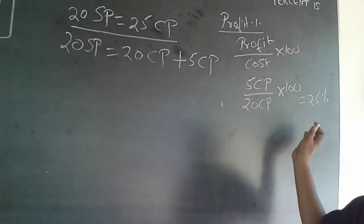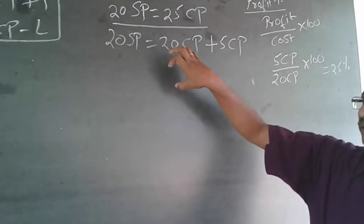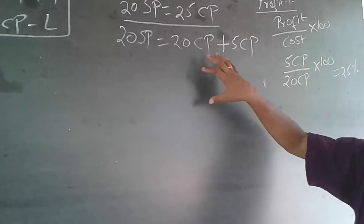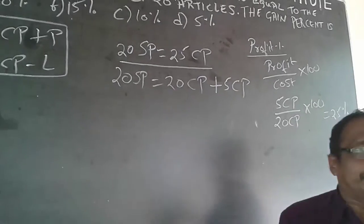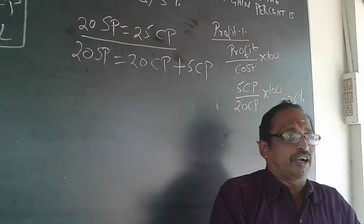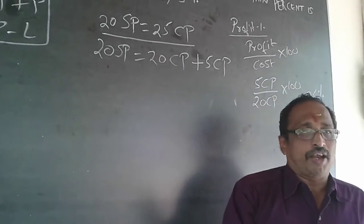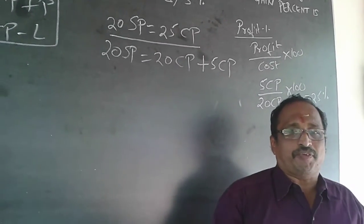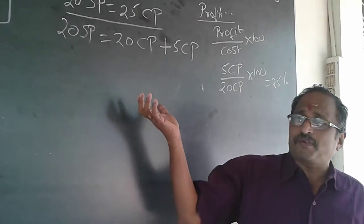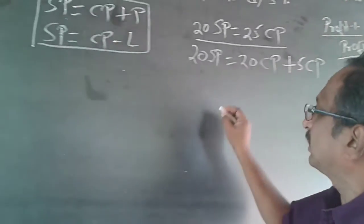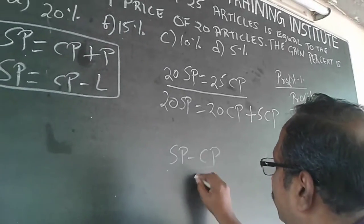Once you understand this logically: you purchased 25 articles, sold 20 articles and recovered your money, so you have 5 articles remaining in hand. Those 5 articles are your profit. So 5 divided by 20 gives your profit percentage, which is 25%. There is also a direct formula for this.